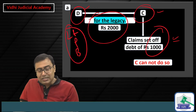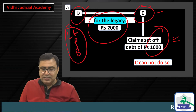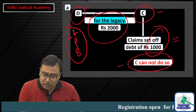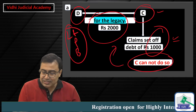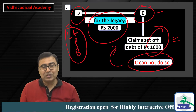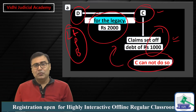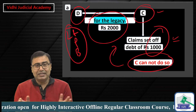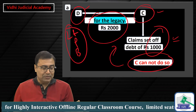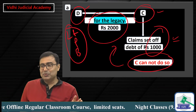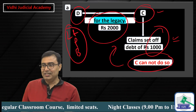In this case C cannot claim set-off because both parties' capacities are different. The capacity of D in the original suit is as legal representative of B, not personal. So the same character condition is not satisfied, and set-off cannot be claimed.